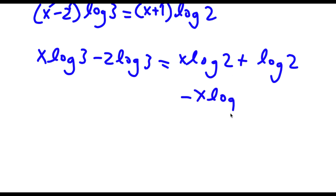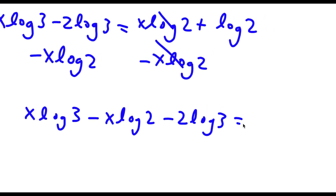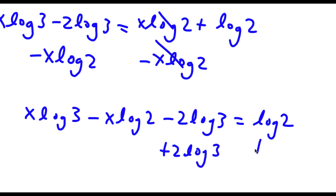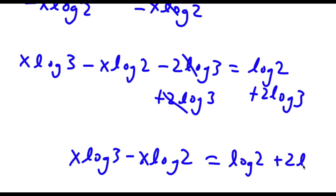Now I'm going to subtract x log 2 on both sides, so those two cancel out and I'm left with x log 3 minus x log 2. Then I'm going to add 2 log 3 on both sides, and those two cancel out, leaving x log 3 minus x log 2 is equal to log 2 plus 2 log 3.